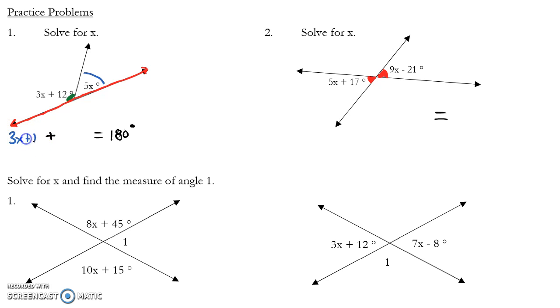Now to go through and do the algebra, it's 3x plus 12, that's this first angle, plus 5x, my second angle. Combine my like terms. Subtract 12 from both sides and 180 minus 12, we get 168. Divide both sides by 8, we get x equals 21.